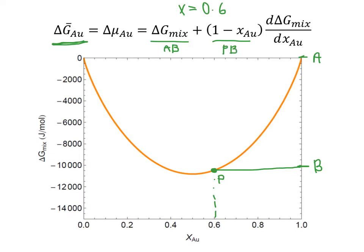So now we just have this last term, d delta G of mixing dx. So that's really just the slope of the delta G mixing curve at this value. And so we find the slope by drawing the tangent to the curve there. And so I'm going to call this C.